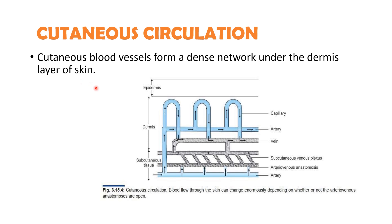First we will see the cutaneous circulation. The cutaneous blood vessels form a dense network under the dermis layer of the skin. The branches of arterioles, that is meta-arterioles, are highly resistant conduits present between the arterioles and the capillaries. The cutaneous capillaries divide into capillary loops which provide a large surface area for heat exchange. The venules form an intensive venous plexus which hold large quantity of blood and lie parallel to the surface of the skin, playing an important role in maintaining body temperature.